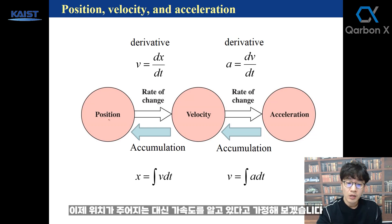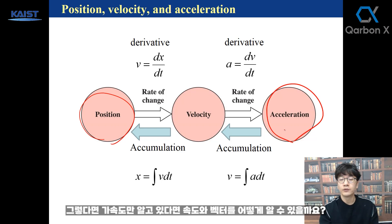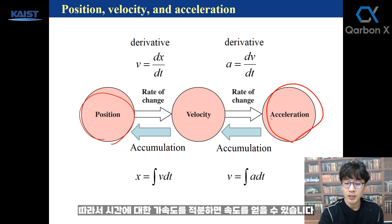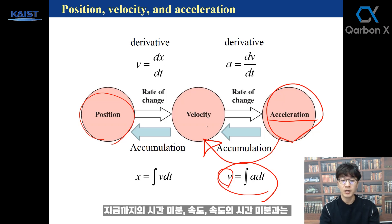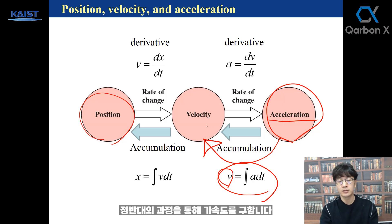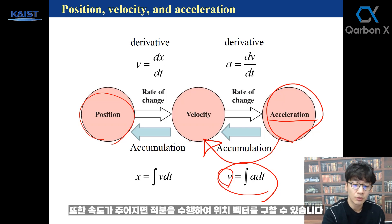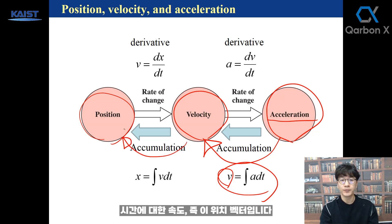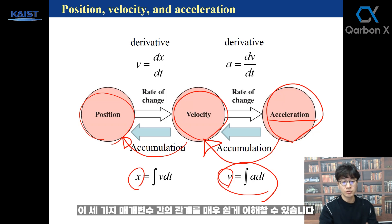The opposite process is integration. If acceleration is known but velocity and position are not, we can find velocity by integrating acceleration with respect to time. Similarly, integrating velocity with respect to time gives position vector. Derivative and integration are opposite operations — very easy to understand the relationship between all three parameters. For example, if acceleration is given as at plus b, then velocity is the integral of that, and position is the integral of velocity.